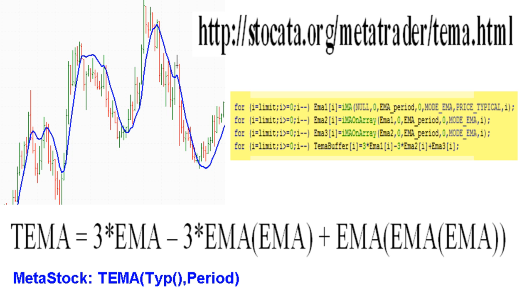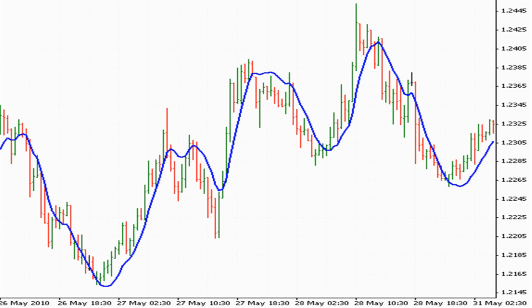MetaStock and many other programs have a built-in function for the TEMA average. If you need a TEMA average on the typical price — the high plus low plus closing price divided by 3 — you would write the MetaStock formula as shown on this slide. For MetaTrader 4, you can find a custom formula for a TEMA average on the typical price at my website. So if you are looking for good smoothing but still a fast reacting average even using longer periods, then the TEMA average is for you.